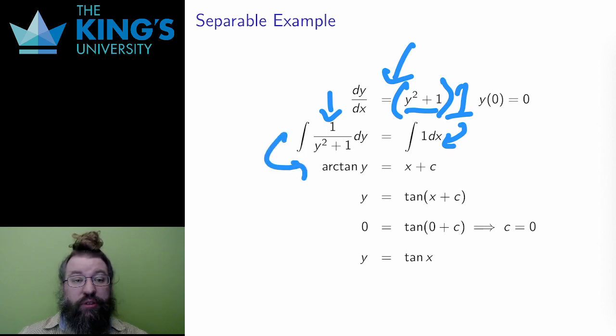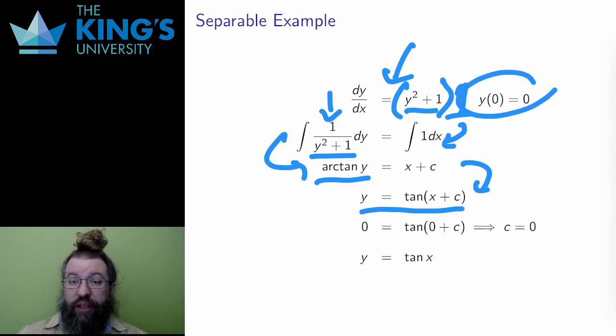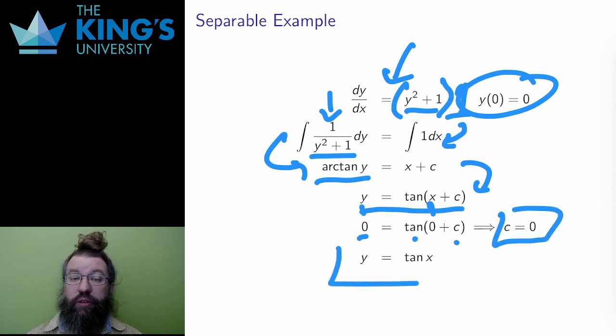The left is from the tables. After integrating, I solve for y by using tangent to cancel off arctangent. Finally, I put the initial conditions in. Both are 0, I solve for c, which is also 0, and I conclude that this differential equation is solved by y = tan(x).